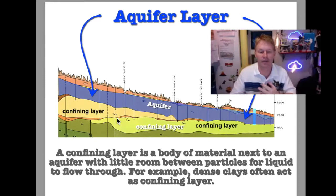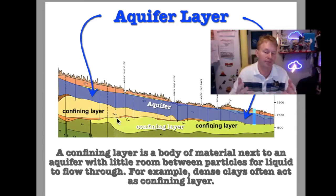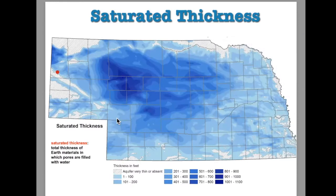The confining layer is a body of material next to an aquifer with little room between particles for liquid to flow through, like a dense clay or solid rock. This is the thickness of the aquifer in Nebraska — in some areas it's relatively thin, in other areas it's a thousand feet deep. In the western area it's pretty thick.